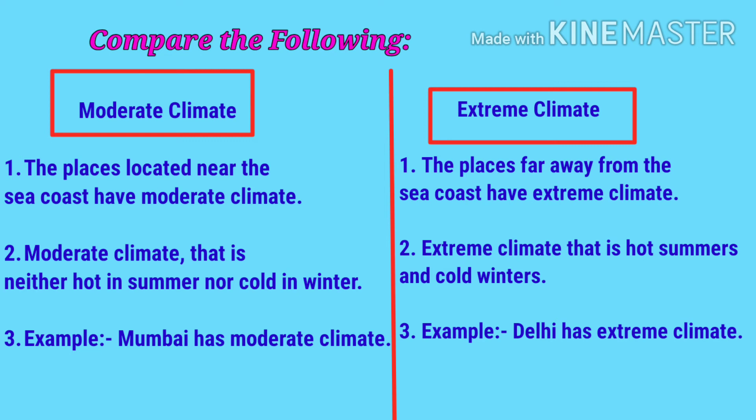Compare moderate climate and extreme climate. Places located near the sea coast have moderate climate — that is, neither very hot in summer nor very cold in winter. For example, Mumbai has moderate climate. Places far away from the sea coast have extreme climate — that is, hot summers and cold winters. For example, Delhi has extreme climate.